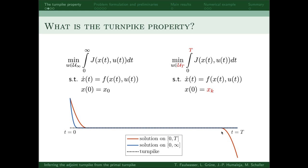Note that this idea of computing the optimal solutions on the infinite horizon by consecutively solving these finite horizon problems is utilized in model predictive control, which is one of the reasons why the turnpike property is important.